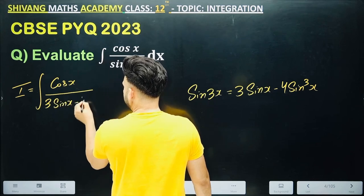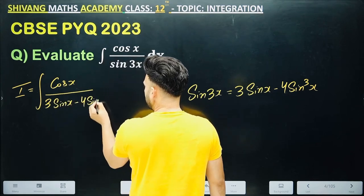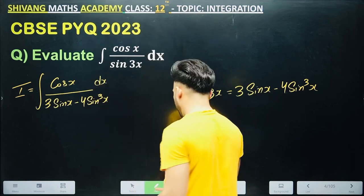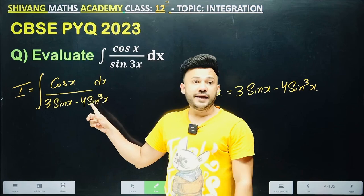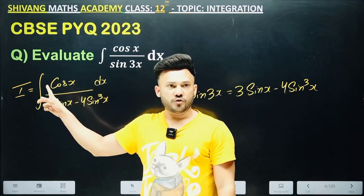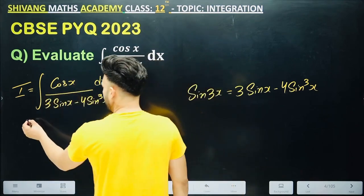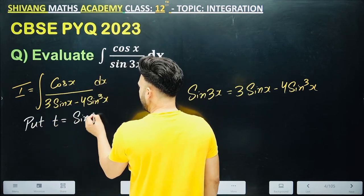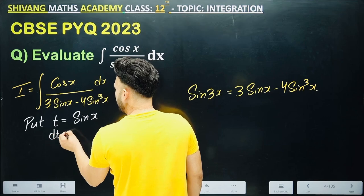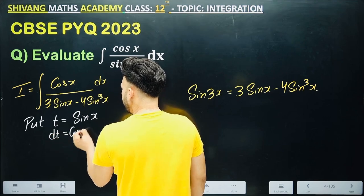The differentiation of sin x is cos x. So take sin x as t. T equals sin x, so it will become dt equals cos x dx. Replace these values in the integral.